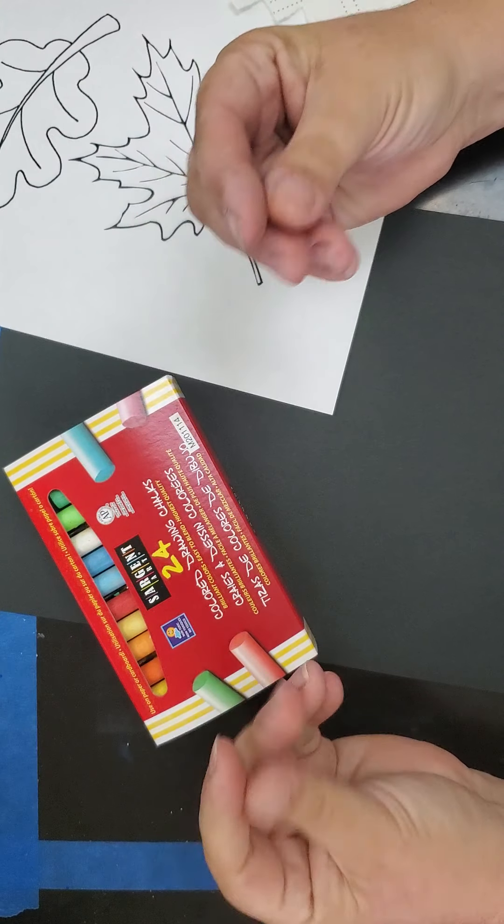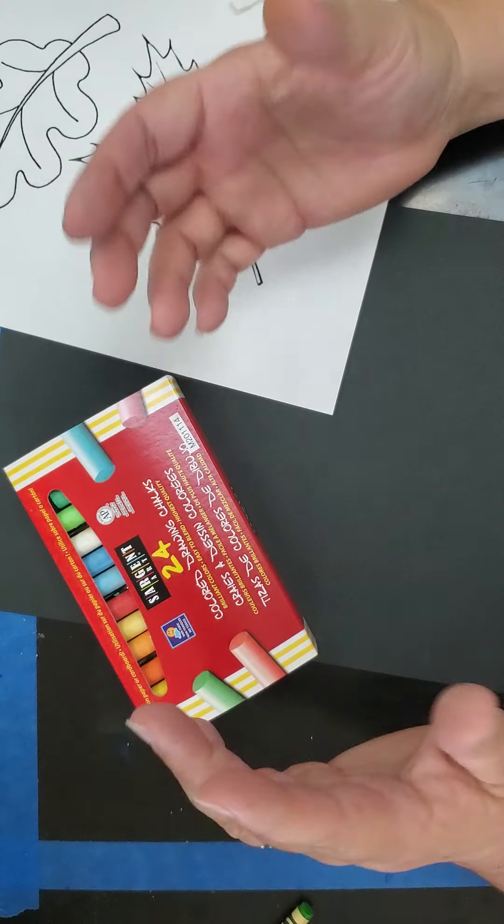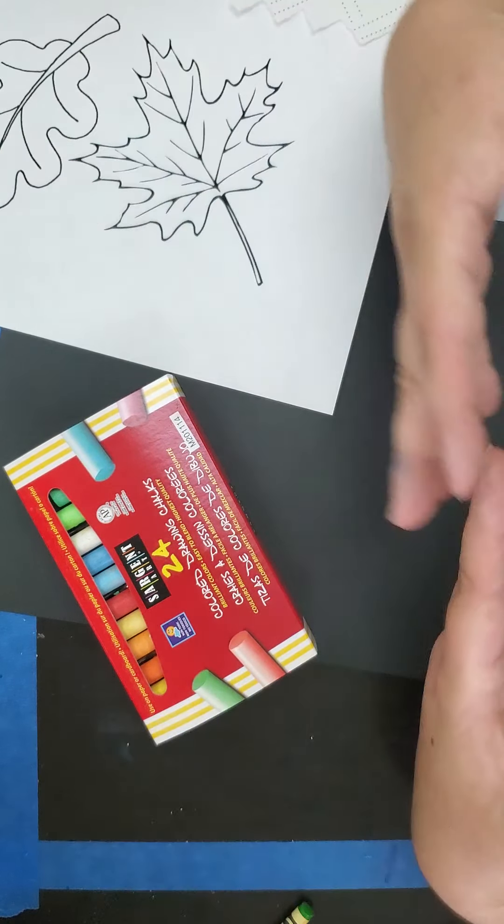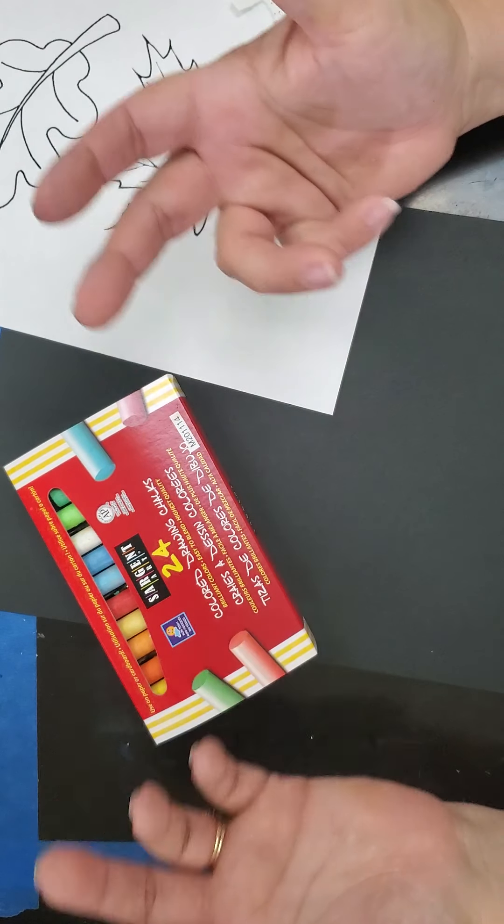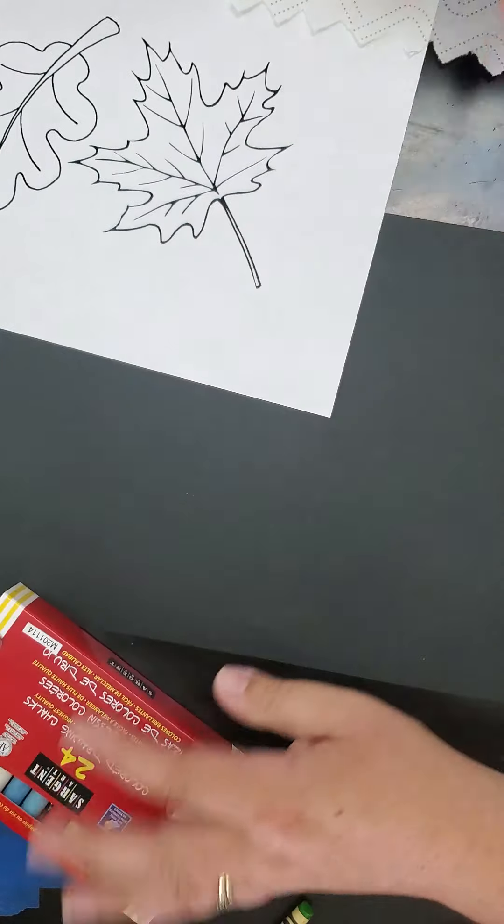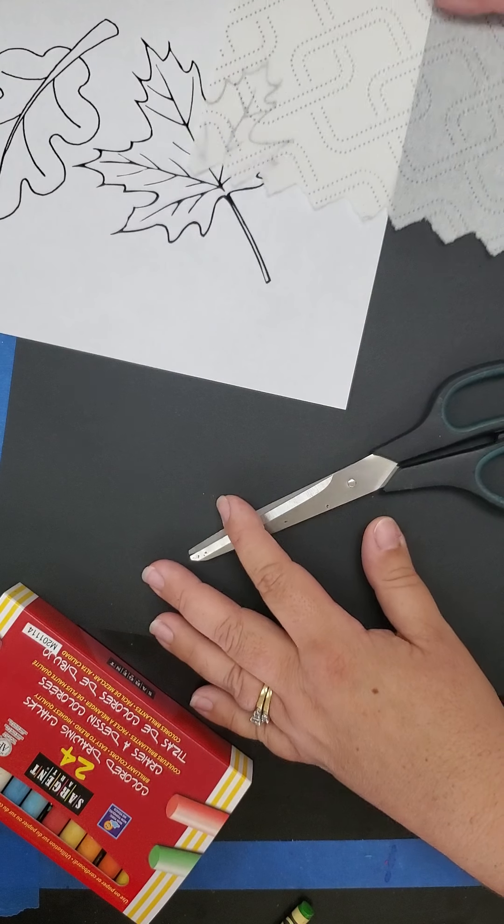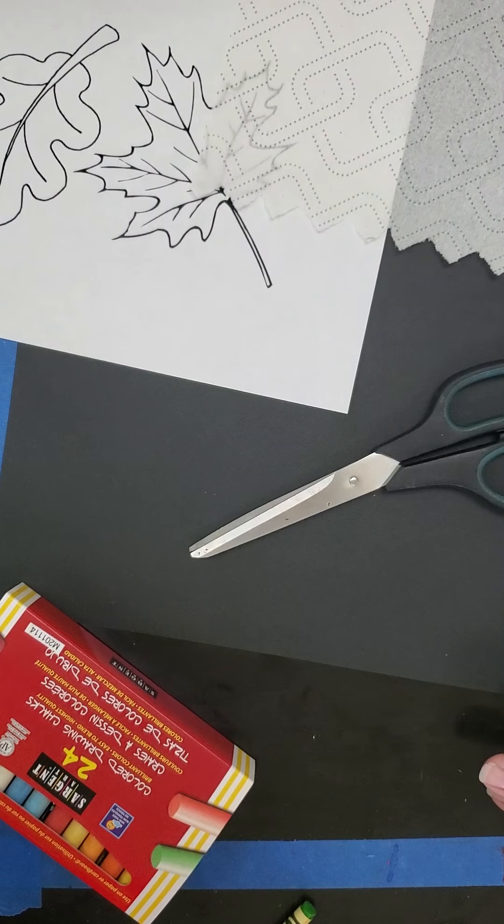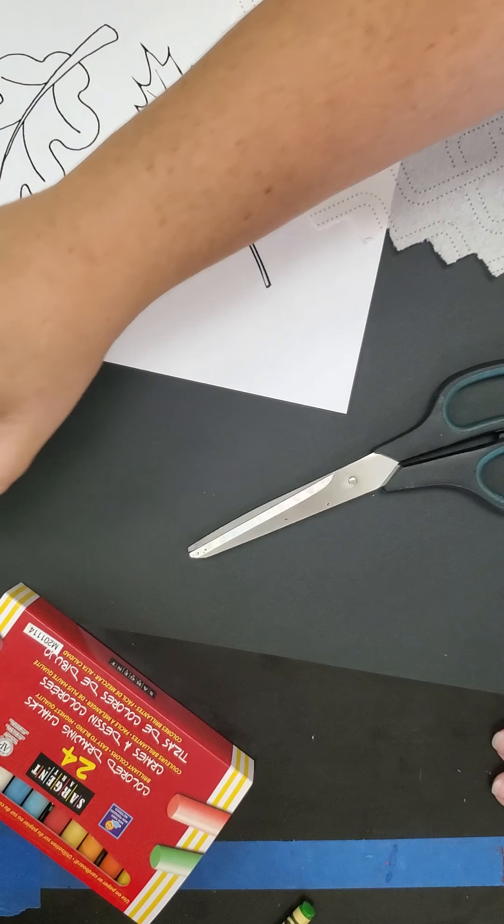It does get a little messy, so be careful of where you're sitting. You can do this outside. The weather is really beautiful right now, but you don't want to touch your face and your clothes a lot once you start this, so you want to make sure you're near a sink. You need scissors, and I have a paper towel here just to keep my hands a little cleaner, and you need a glue stick for the end of the activity.